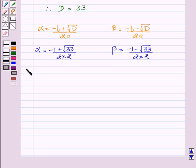This implies α = (-1 + √33) / 4 and β = (-1 - √33) / 4.